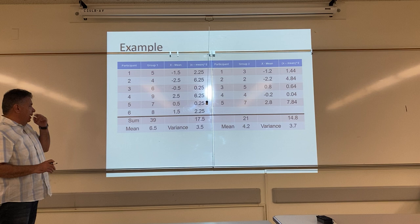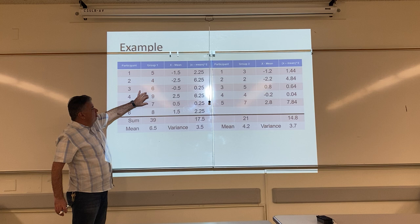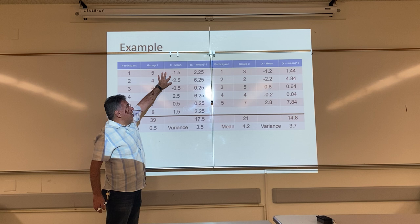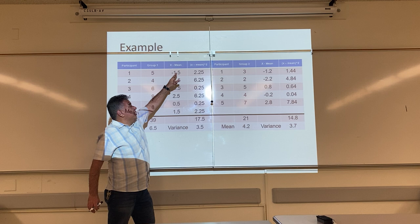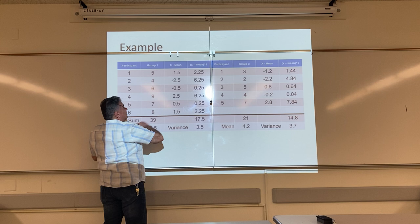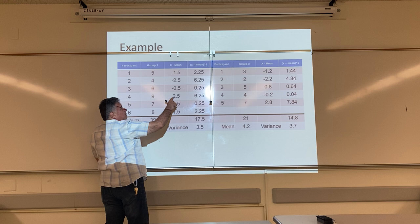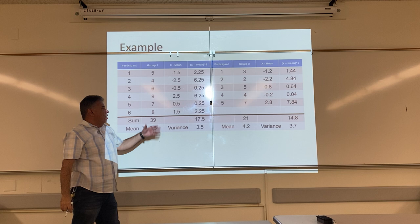Here I have a table where I've already done that. 5 plus 4 is 9, plus 6 is 15, 24 is 31, plus 8 is 39. 39 divided by 6 is 6 and a half. This is the mean. 5 minus 6 and a half is negative 1 and a half. That's the difference. This is x minus x bar. This next column is the difference squared. So I'm going to take all of my differences. This is x minus x bar, the mean. This is the difference. This is the difference squared. Sometimes the difference is negative. Sometimes it's positive. But when I square them, they're all positive.